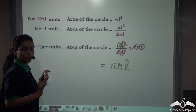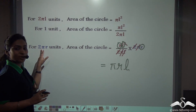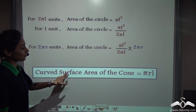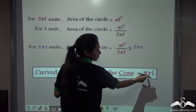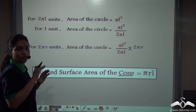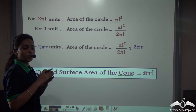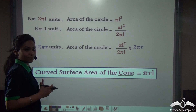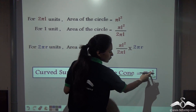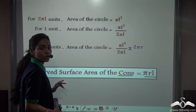So we successfully found out the area for 2πr units of circumference. This is called the curved surface area of the birthday cap — that is the cone — which is πRL. So if we take out the curved surface area of that birthday cap, we will know how much paper is required to make it. The curved surface area of any cone is πRL, where R is the radius of the circular base and L is the slant height of the cone.